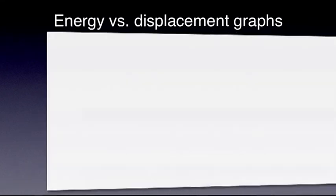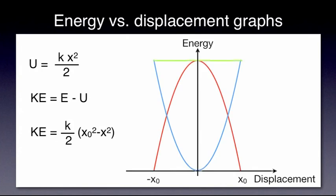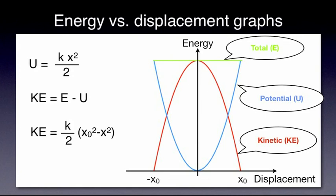We can plot a graph of kinetic energy and potential energy as functions of displacement x. U equals kx squared over 2. In order to write an expression of kinetic energy as a function of x, we can write kinetic energy equals total energy minus potential energy. And from here, kinetic energy equals k over 2 x0 squared minus x squared. The graphs show how kinetic and potential energies change with x.